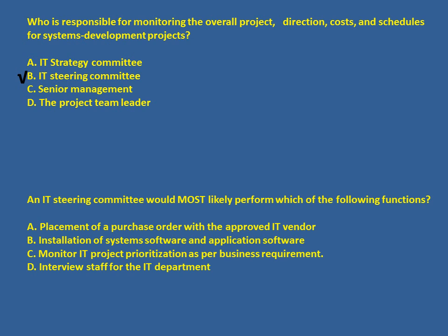Let us take one more example. The IT steering committee would most likely perform each of the following functions — which one is correct? Options like placement of purchase or installation of system software or interviewing staff are basically roles of the IS or IT department. However, monitoring IT project prioritization as per business requirements is the prime responsibility of the IT steering committee — they ensure IT projects align with business requirements.